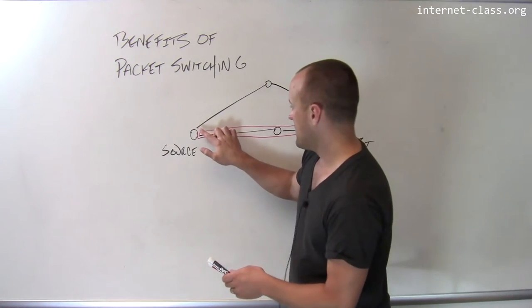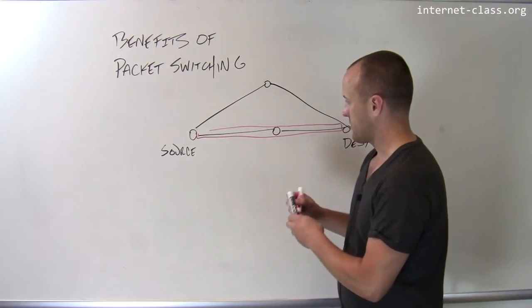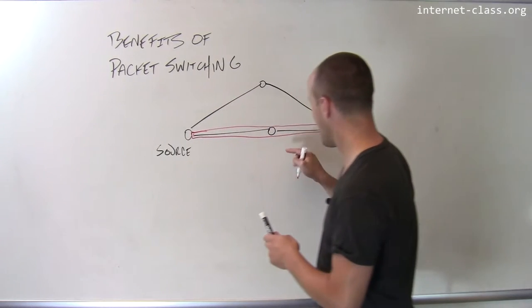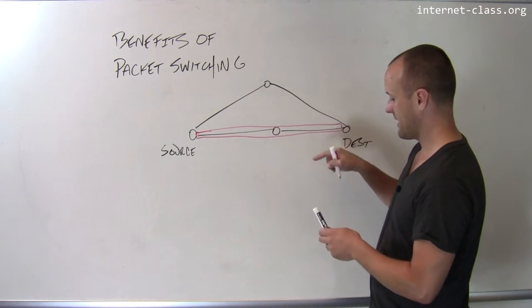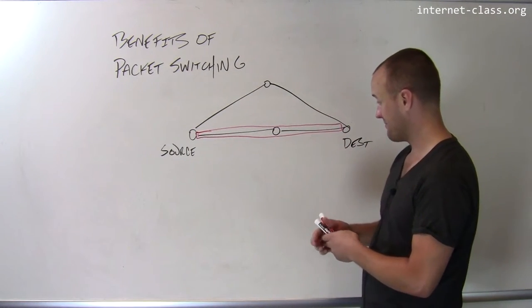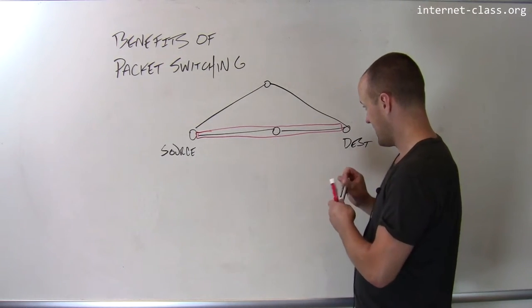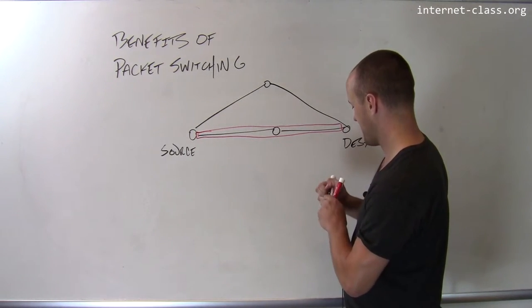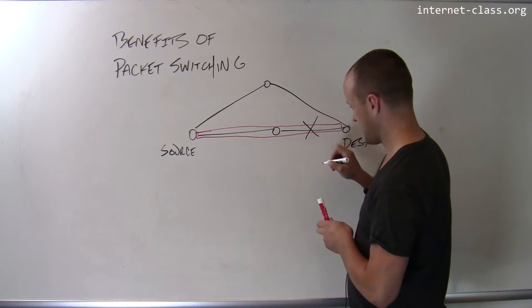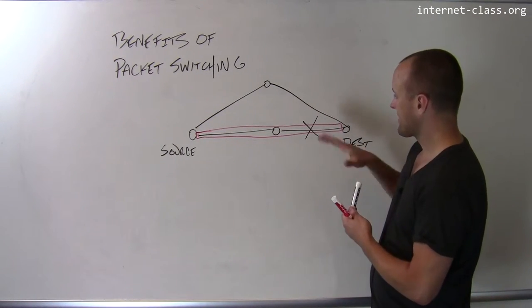And here's another problem with circuit switch networks. Let's say that this connection right here goes down. So let's say something happens - backhoe problem or power outage or something - and this connection goes down, this link goes down.